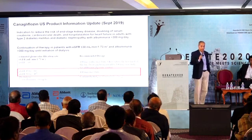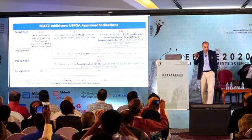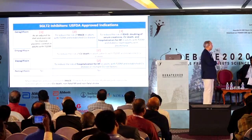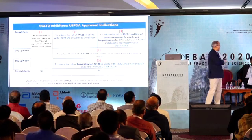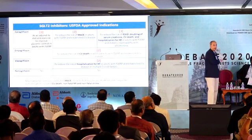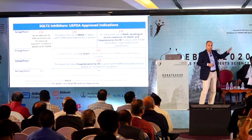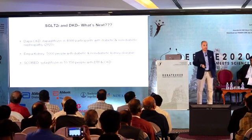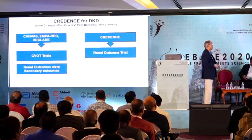According to individual USFDA label updates: for reduction of three-point MACE, only canagliflozin has the label update; for change in kidney outcome, it is canagliflozin; for reduction of CV death, it is empagliflozin; for prevention of hospitalization for heart failure, it is dapagliflozin; and for ertugliflozin, there is no label update beyond glucose lowering. These distinctions guide prescribing choices among SGLT2 inhibitors across different disease presentations.